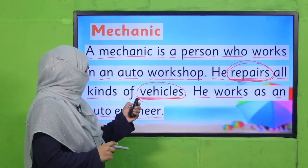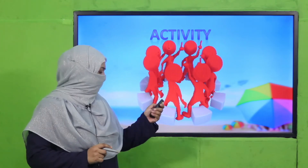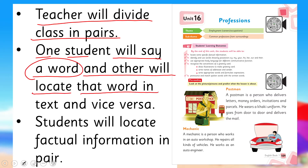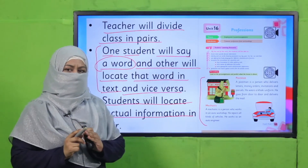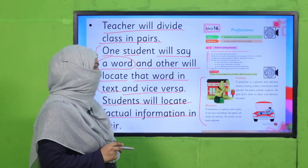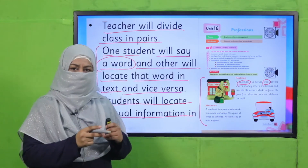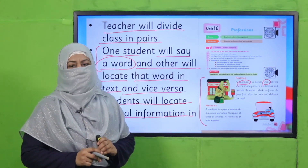I'm stopping my reading here. Now you will do an activity. Your teacher will divide the class into pairs. One student will say a word and the other will locate that word in the text, and vice versa. For example, I say 'find where postman is written' and they locate it. This is how you locate words in a fun way. After that you will locate factual information. Pause the video, enjoy the activity, and come back.